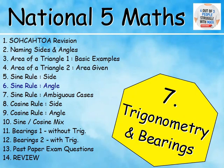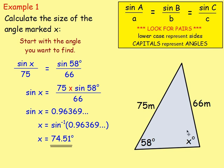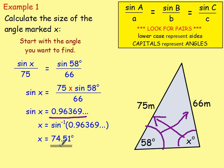We then flipped the sine rule upside down to work out the size of an angle. Remember, the original form is given on the formula sheet in the exam, but this flipped version is not. All you've got to remember is: if you're working out an angle, flip the sine rule upside down, so you get sine A over A equals sine B over B equals sine C over C. In an example where we're working out the size of an angle, we put the angles on top: sine X over 75 equals the sine of the known angle over its side. Then rearrange to find sine X, and do sine to the minus 1 to get the angle.